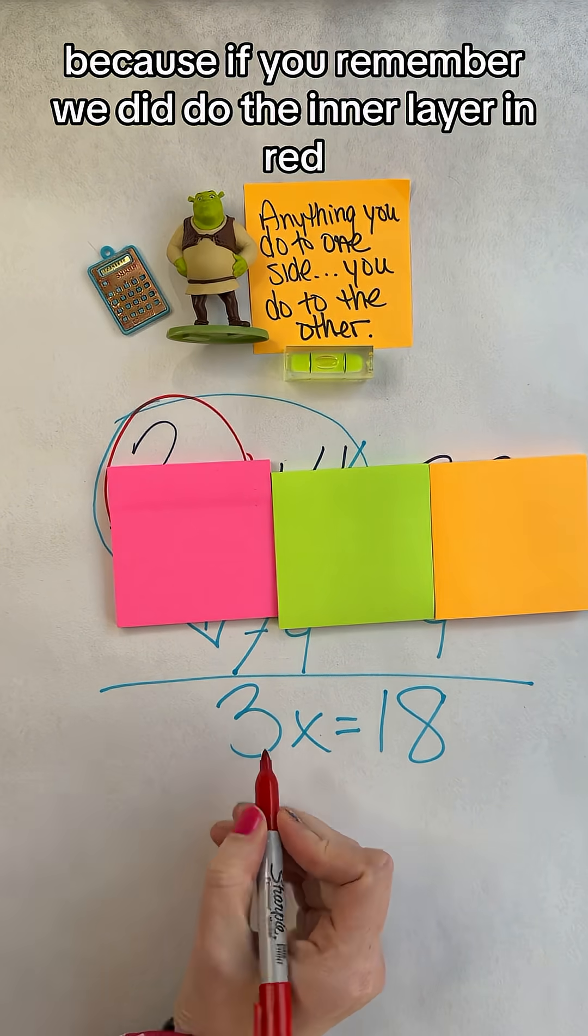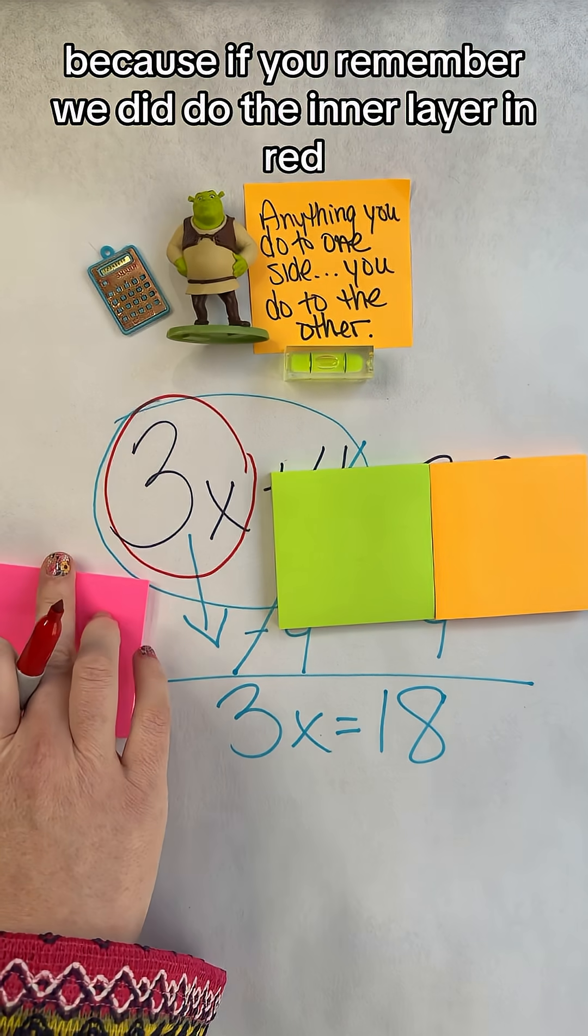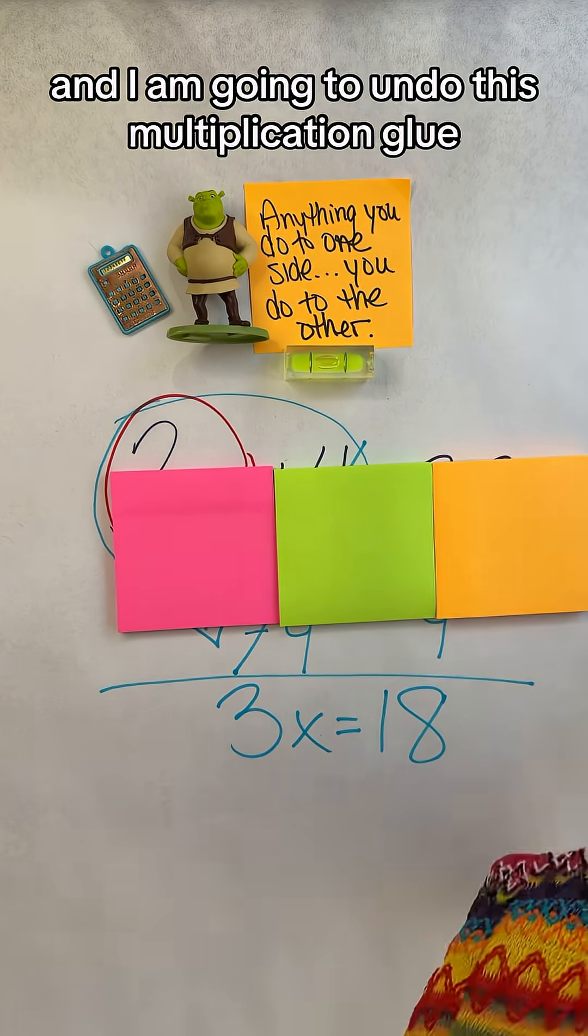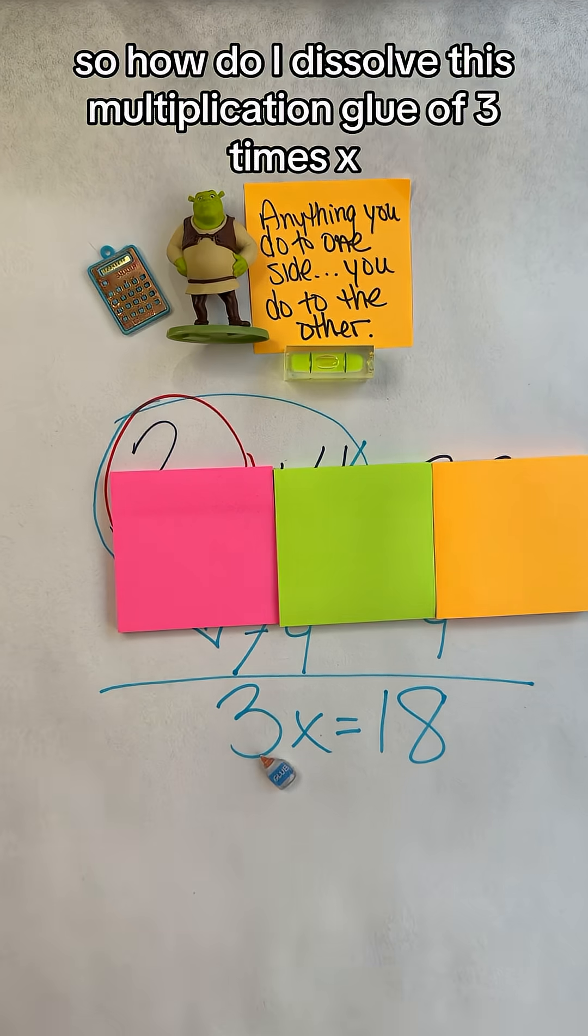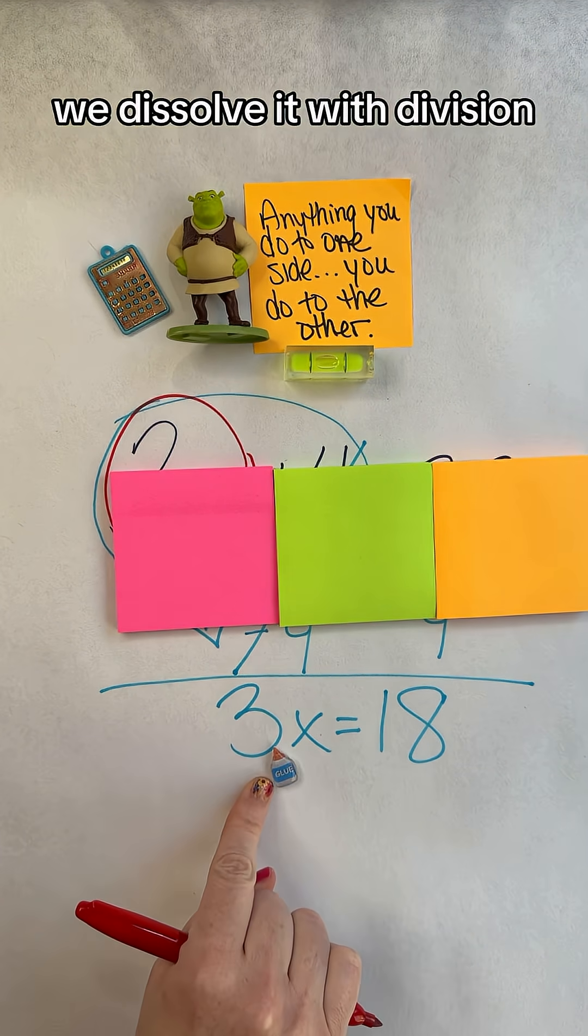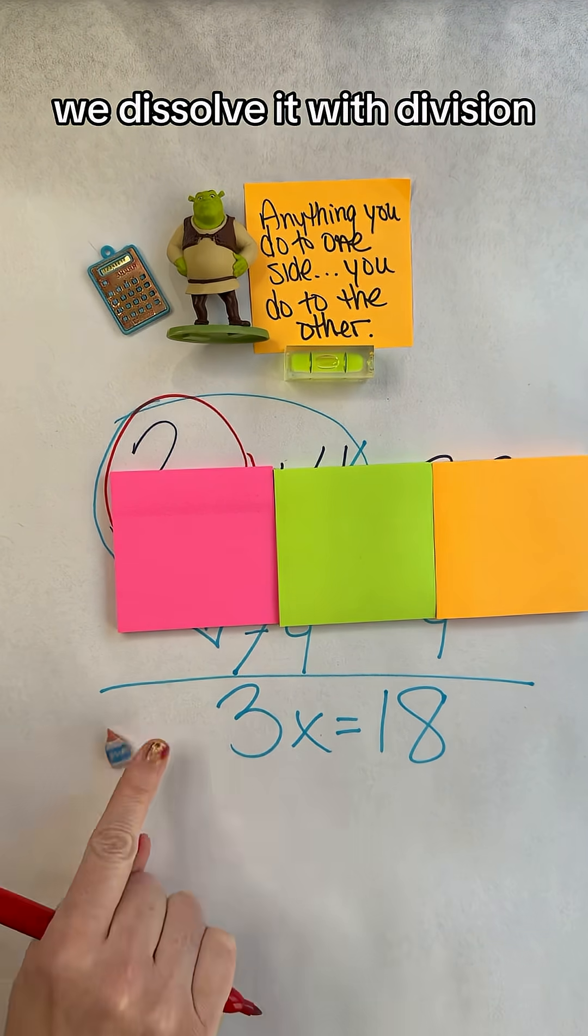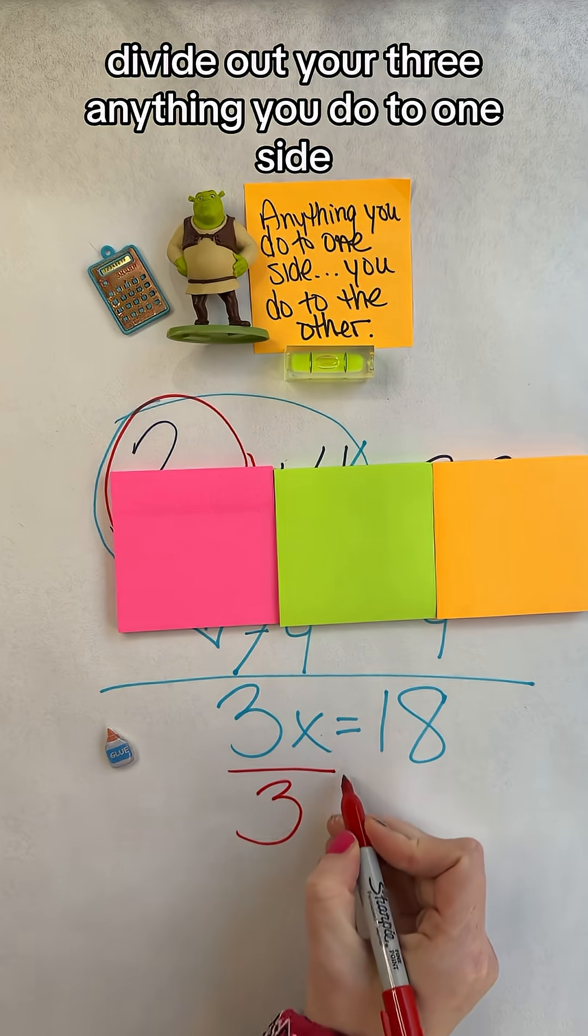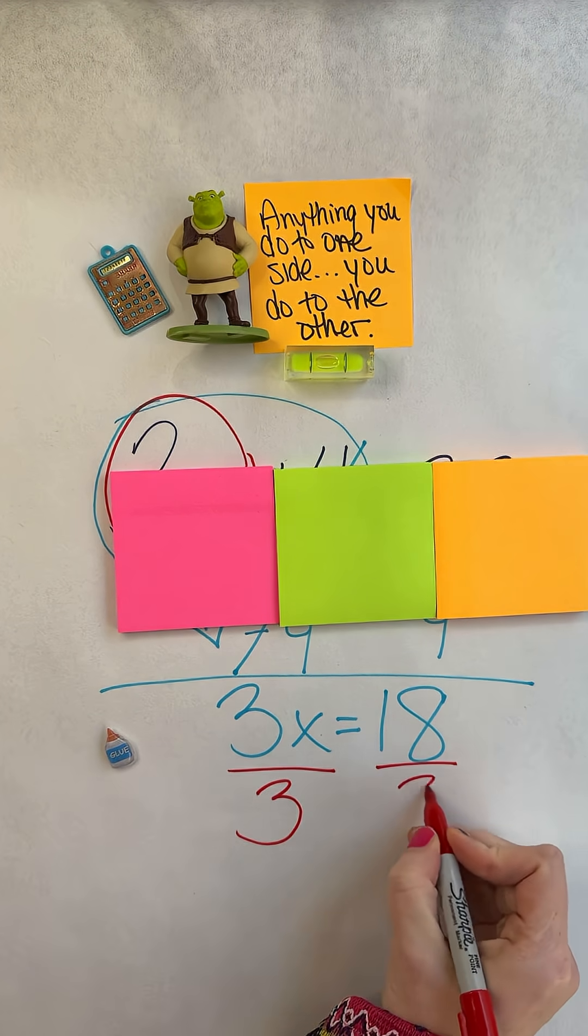Now, I'm going to switch to my red, because if you remember, we did do the inner layer in red. And I am going to undo this multiplication glue. So how do I dissolve this multiplication glue of 3 times x? We dissolve it with division. Divide out your 3. Anything you do to one side, you do to the other.